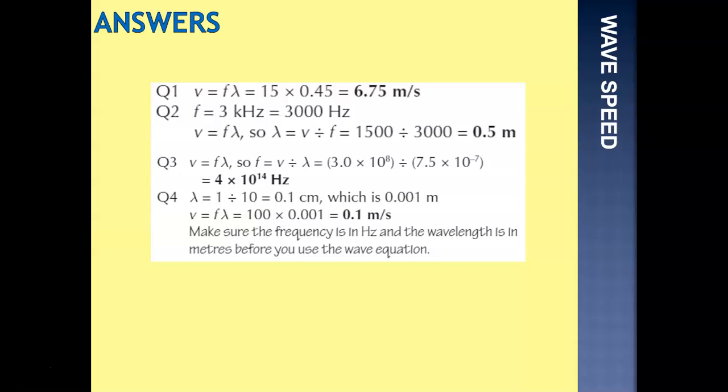So, 10 waves in 1 centimetre. So the wavelength would be 1 centimetre divided by 10, giving us 0.1 centimetres, 0.001 metres. Remember, we need everything to be converted to metres. 0.1 centimetres would transfer to 0.001 metres. For our speed, we need the frequency times the wavelength. Frequency was set at 100, times 0.001, gives us 0.1 metres per second. As it says there, make sure your frequency is in hertz and your wavelength is in metres.